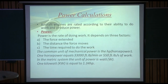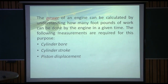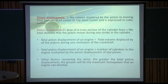The power of an engine can be calculated by understanding how many foot-pounds of work can be done in a given time. The measurements required are cylinder bore, cylinder stroke, and piston displacement. Piston displacement is the volume displaced by the piston in moving from bottom dead center to top dead center, expressed in cubic inches. It equals the cross-sectional area of the cylinder bore multiplied by the total distance the piston moves during one stroke.